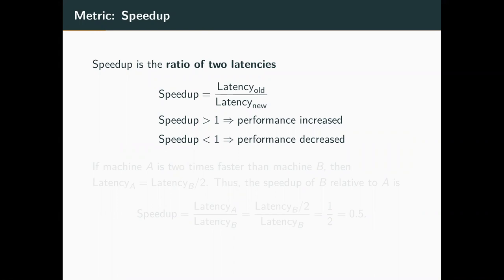The next metric we're going to look at is speed up. This is just a ratio — we're going to find that most of the metrics that are interesting are ratios or products. It's just a ratio of two different latencies: you put the old one in the numerator and the new one in the denominator. If the speed up is greater than one, it means the new latency would have had to be smaller, so we get a performance increase. If it's less than one, we get a performance decrease. We don't have speed up and slow down — we just call it all speed up.